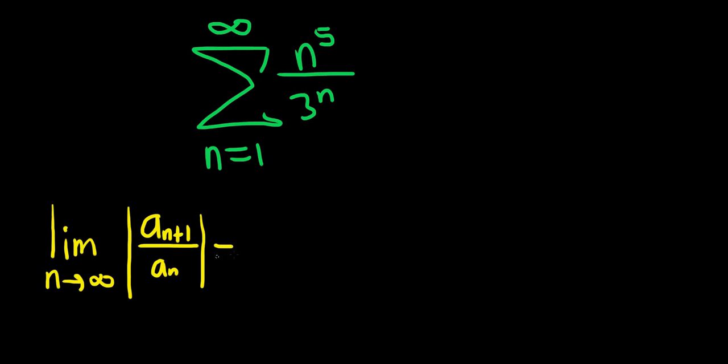So this is equal to the limit as n goes to infinity. Notice that we can drop the absolute value because n here is positive, so there's nothing negative here, so we don't need the absolute value. First, let's focus on a sub n plus 1. So we'll replace all of the n's with n plus 1's. So that will become n plus 1 to the 5 over 3 to the n plus 1.